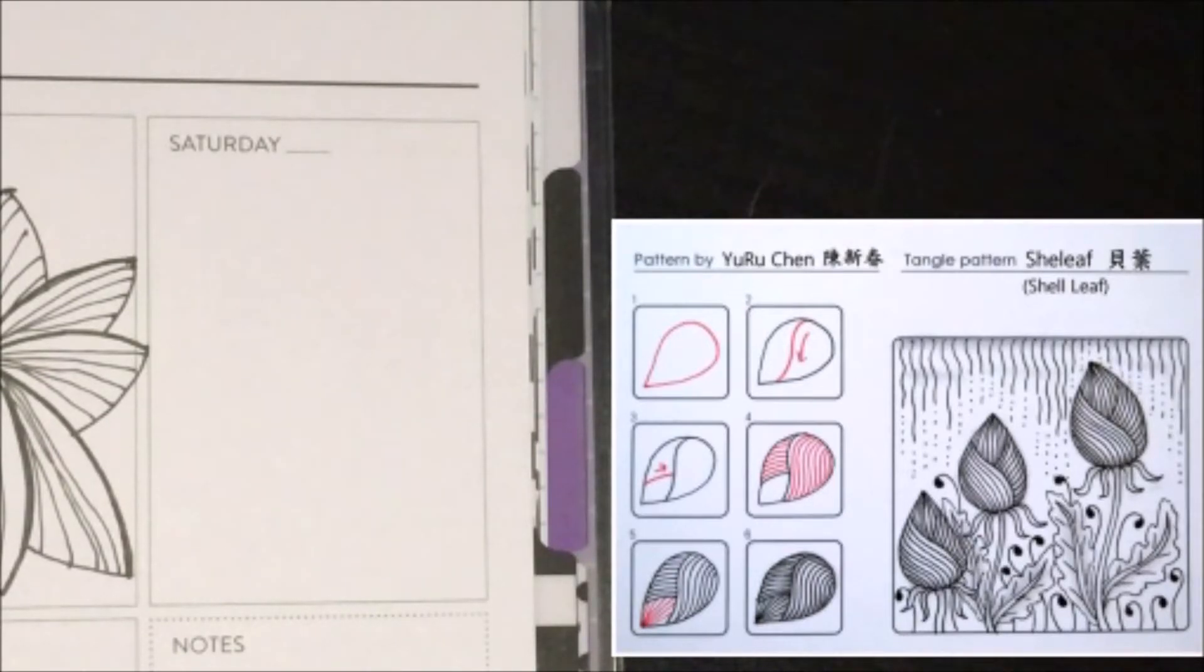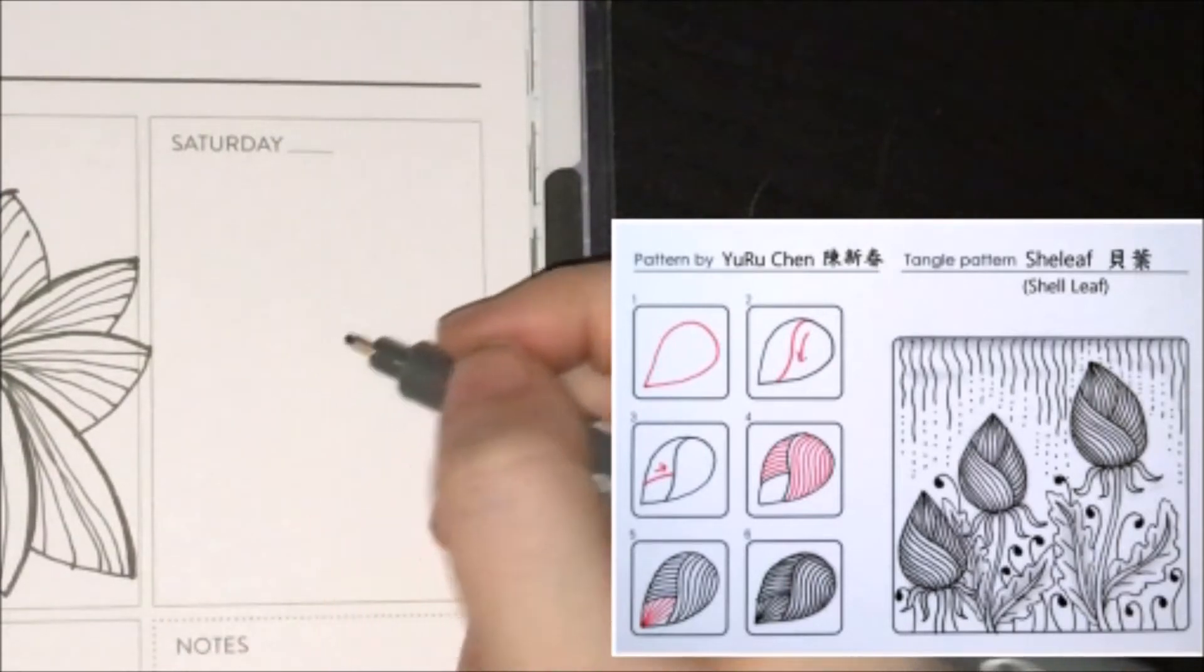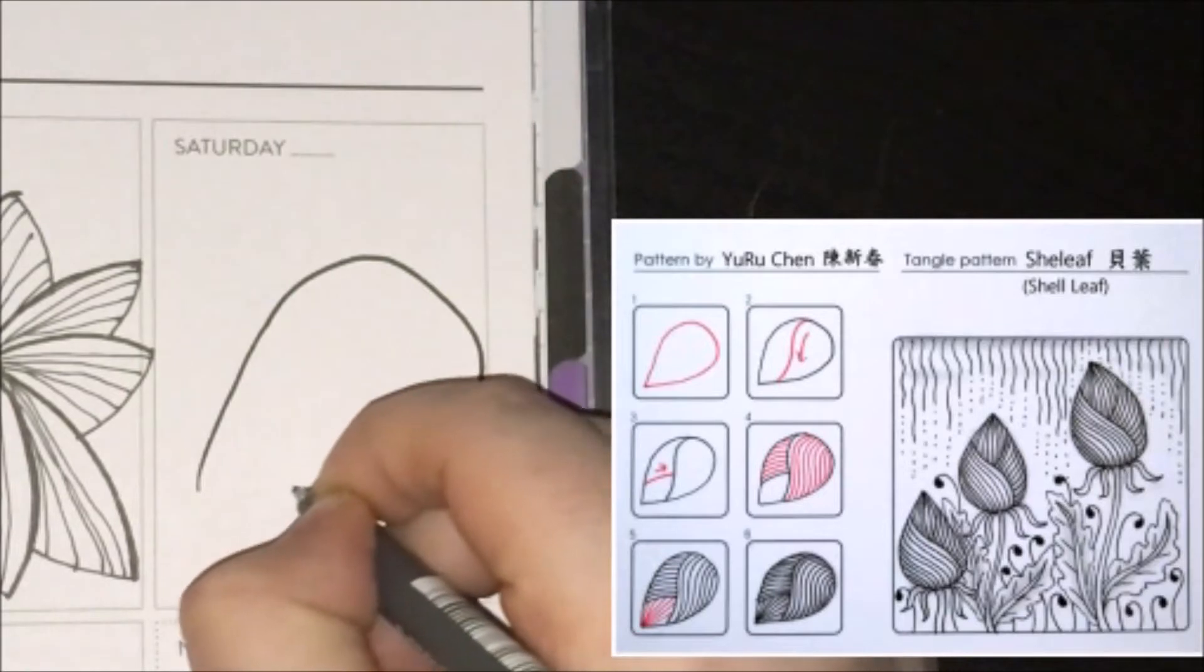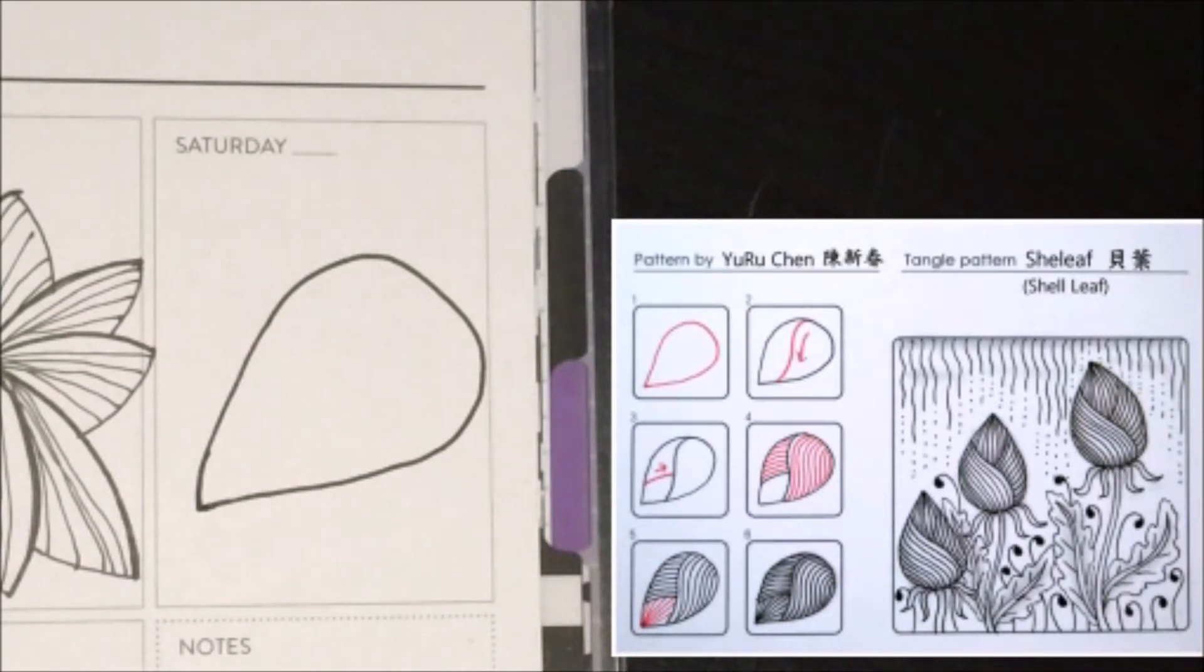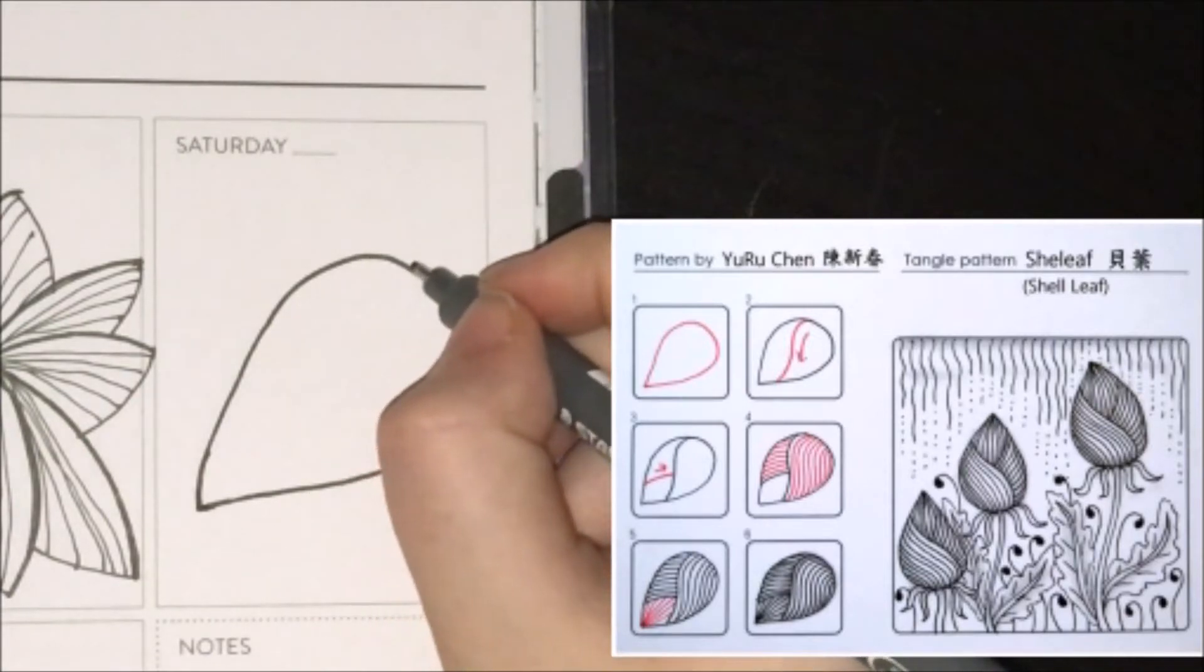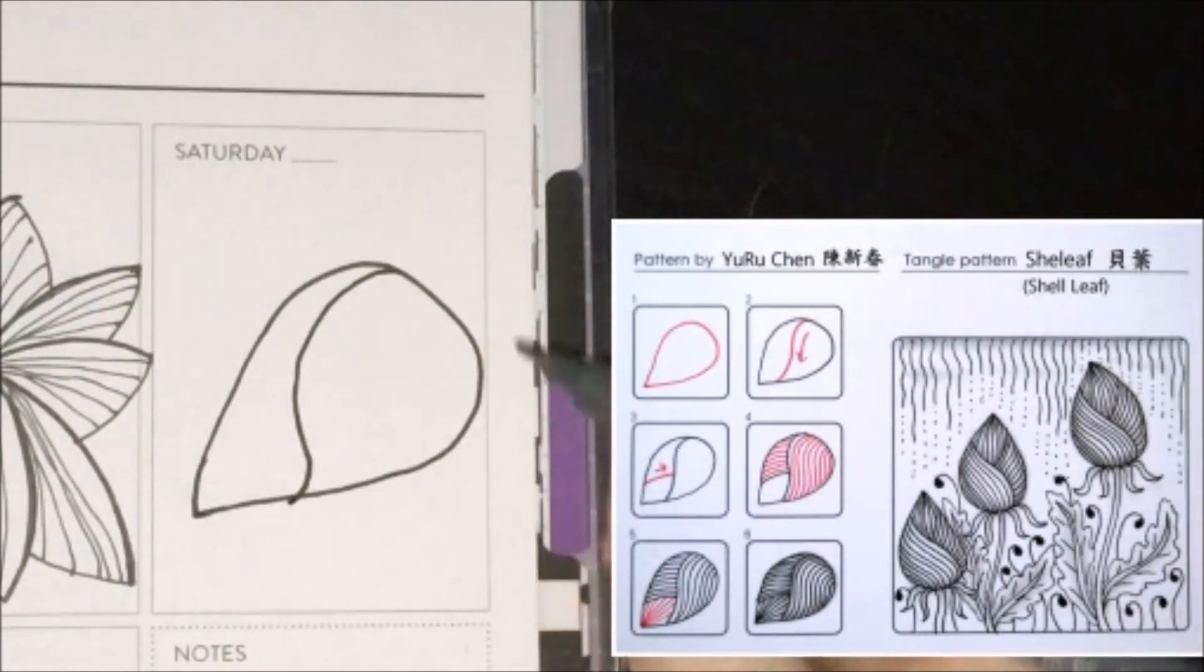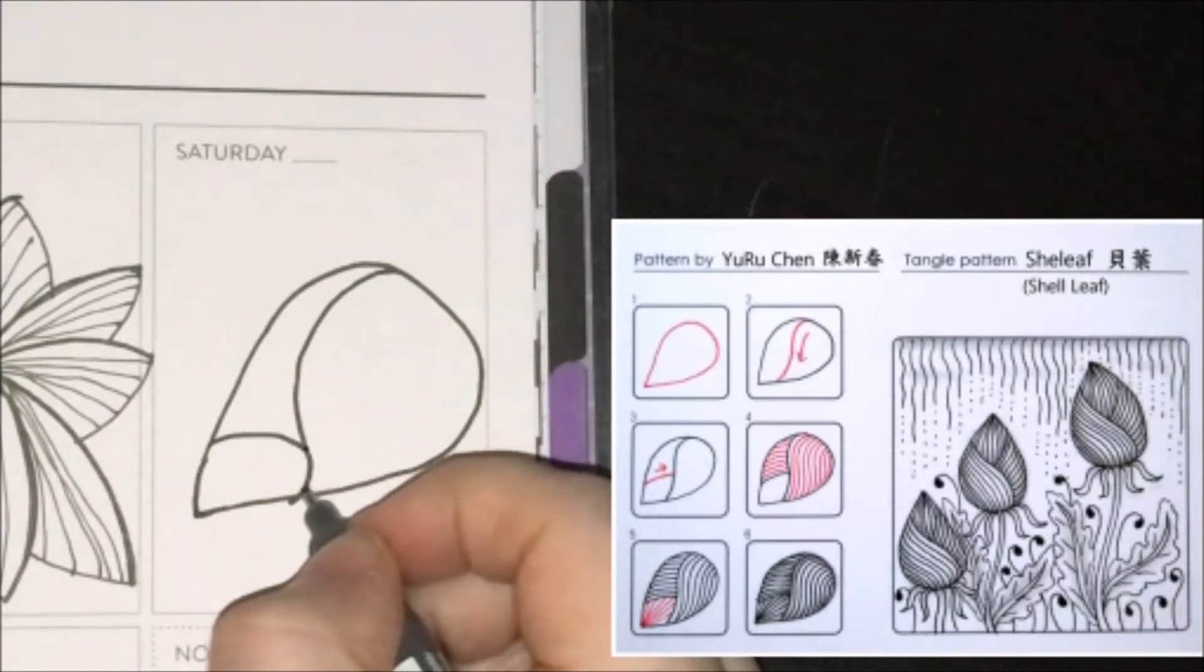The sixth tangle I have for you all today is called Shell Leaf, and it's by Yuru Chen, who I think I've mentioned plenty of times before, and they're one of my favorite tangle creators. So with Shell Leaf, the way you want to get started is you want to make this enlarged teardrop shape, and you can orient it however you want. So with that in place, we're then going to go in a little bit from the bottom, and make an elongated S-curve, and from over here, we're going to connect those up.